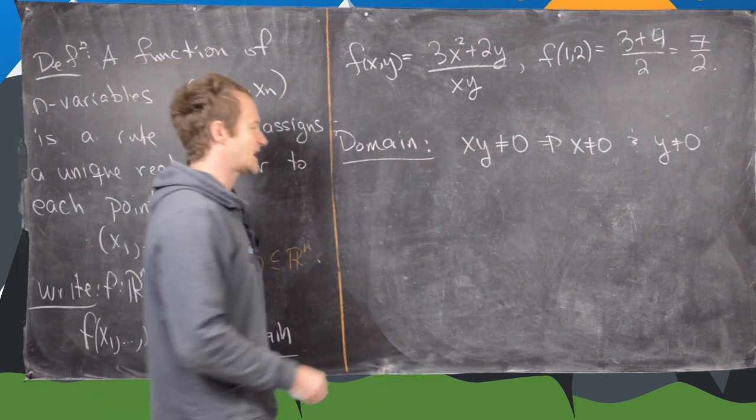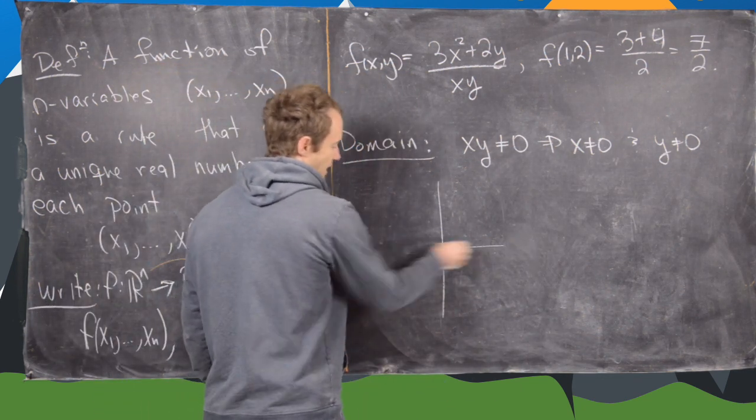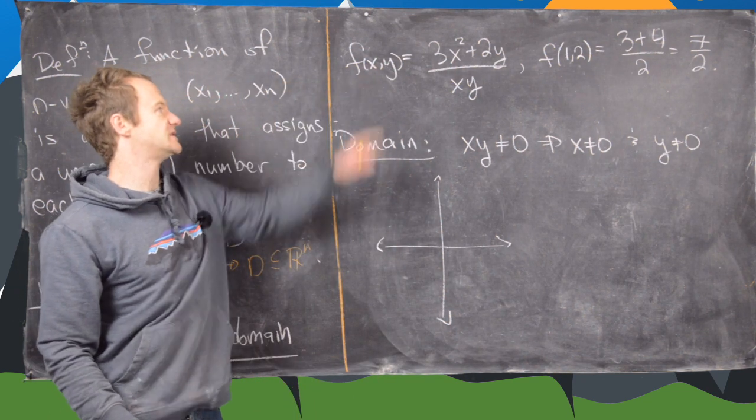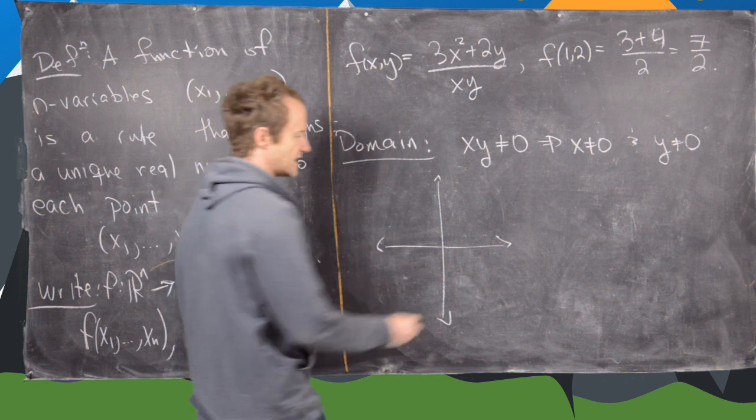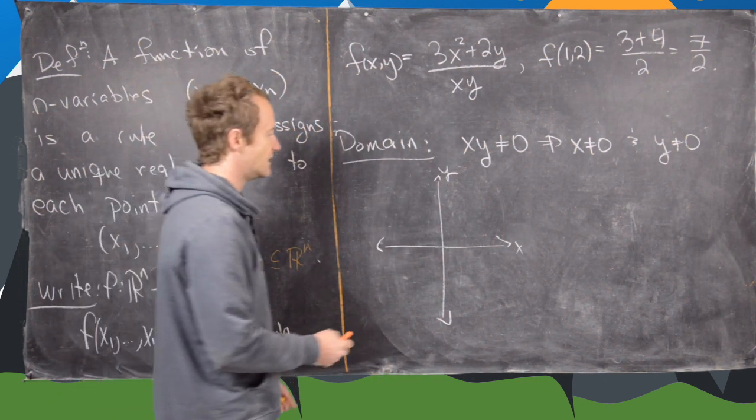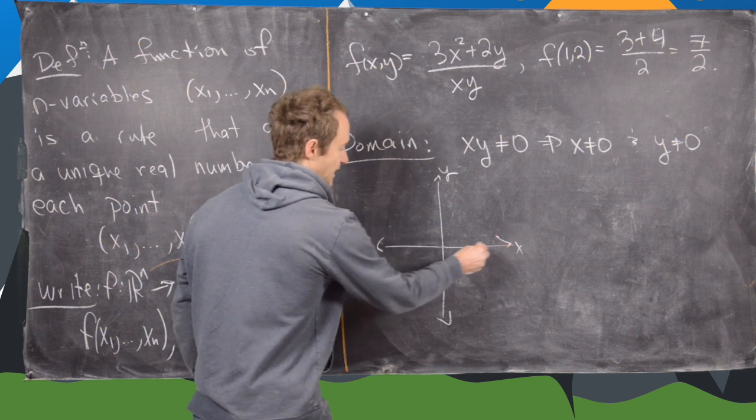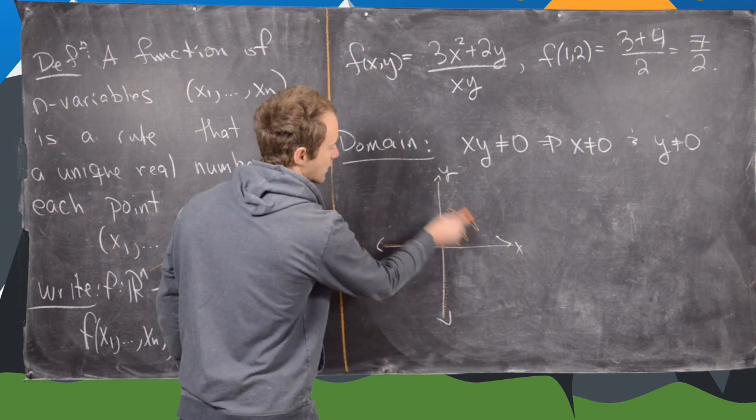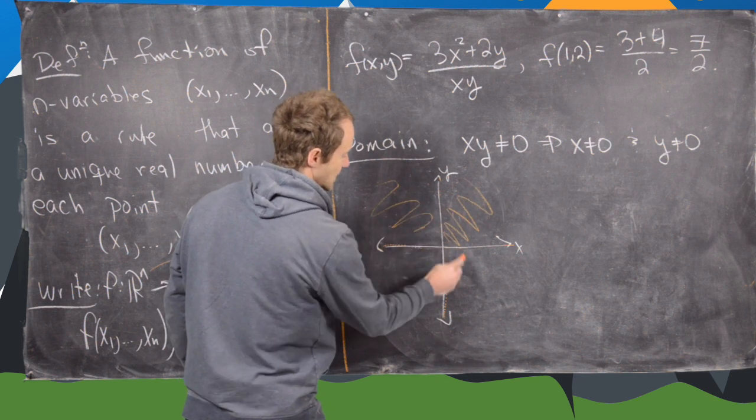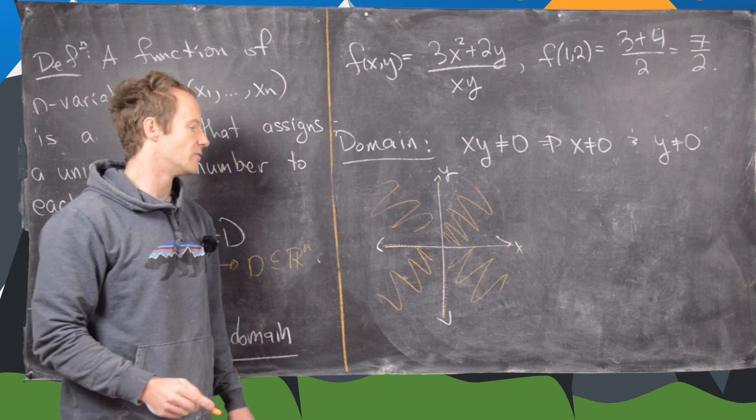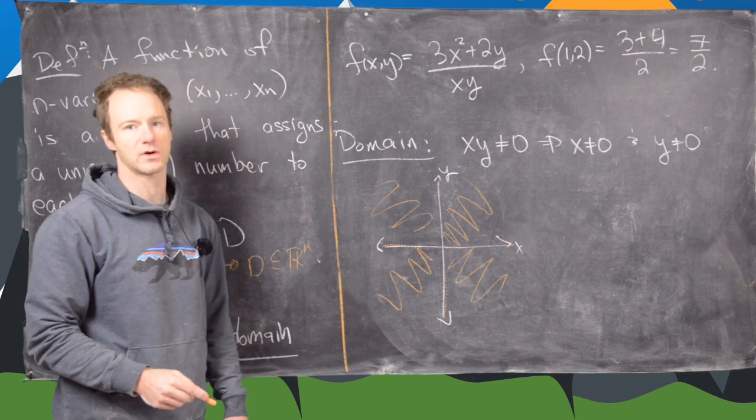We can sketch our domain in the following way. Remember the domain is going to be a subset of R2 in this case because we have xy. Maybe we could say that this is the x-axis and the y-axis, and the domain is going to be everything except for the coordinate axes. So it's a little bit tricky because the coordinate axes are drawn in there, but it's everything except for those coordinate axes.